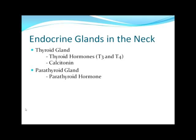Endocrine glands in the neck: we have the thyroid gland and the parathyroid gland. The thyroid is that butterfly-shaped gland around the trachea; the parathyroid gland consists of four to eight little nodules of glandular tissue positioned on top of the thyroid gland. The thyroid makes thyroid hormones T3 and T4, which are involved in metabolism and the way the body uses and metabolizes glucose. The other thyroid hormone is calcitonin.